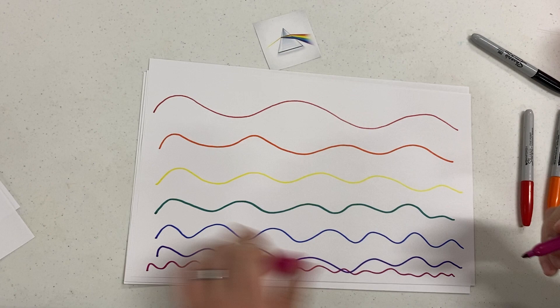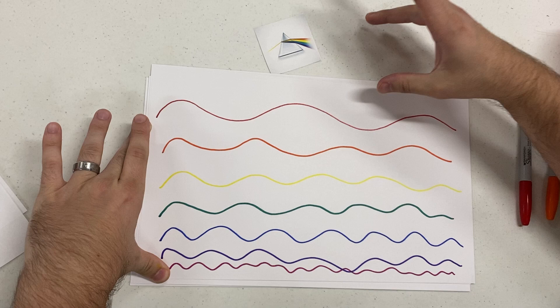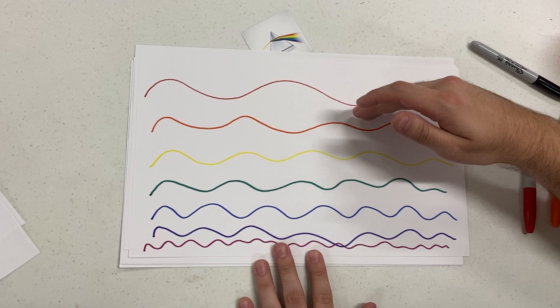Earlier I mentioned ultraviolet and infrared. These are our visual light spectrum, so infrared is moving even slower, whereas the ultraviolet is moving quicker than this violet. So that's where you get the red over here where you have infrared, and then ultraviolet beneath violet.